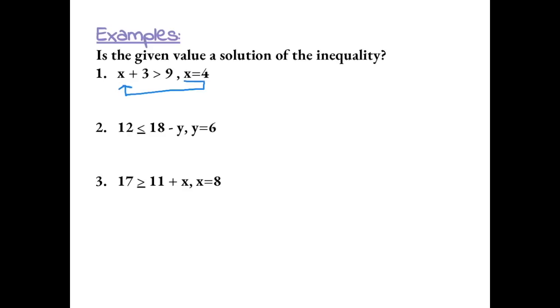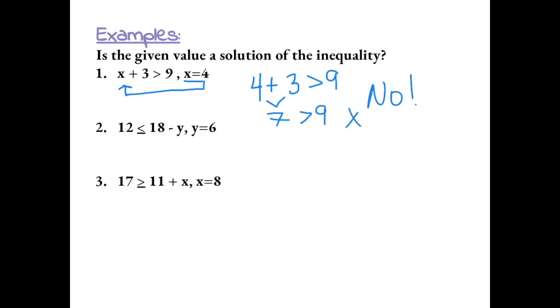Examples. Is the given value a solution of the inequality? Number 1: x plus 3 is greater than 9, and x equals 4. Let's plug 4 in for x and see if we get a true inequality. That gives us 4 plus 3 is greater than 9. Simplifying the left side, we get 7 is greater than 9. Because 7 is not greater than 9, this is not a solution to the inequality.